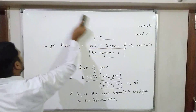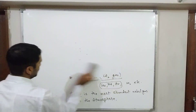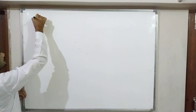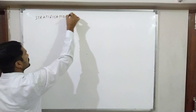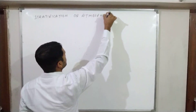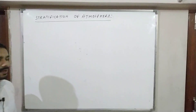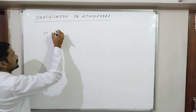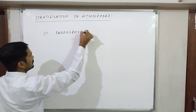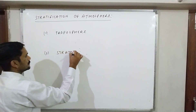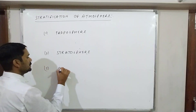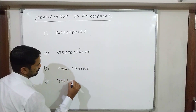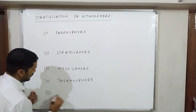Now we move to the classification of the atmosphere, also called stratification of the atmosphere. The atmosphere covering the earth's surface is divided into these layers: troposphere, stratosphere, mesosphere, thermosphere, and lastly exosphere. These are the five layers into which the atmosphere is divided.